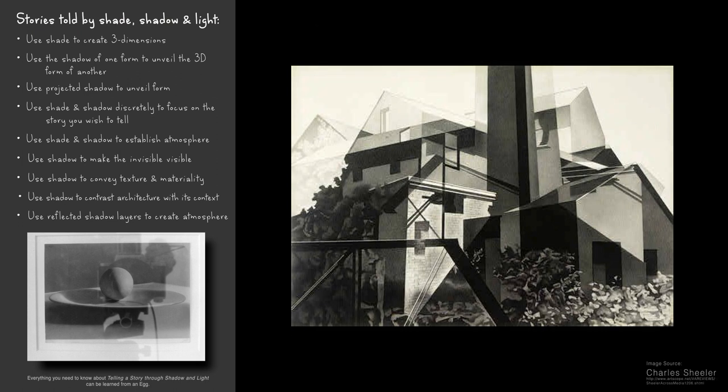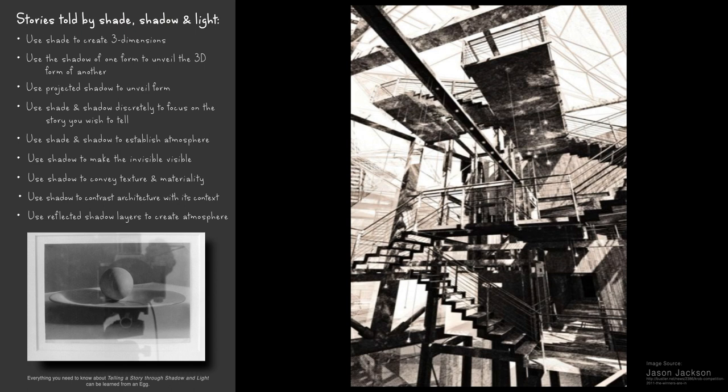And one of the most interesting ways to create atmosphere is to use reflected layers of shade, shadow, and light to tell a story. This drawing by artist Charles Scheler deconstructs and then overlays the shadows for a dynamic effect. This, rendered by Jason Jackson, overlays shadows and highlights for a powerful atmospheric effect.